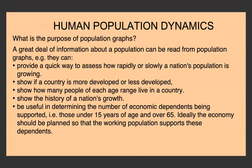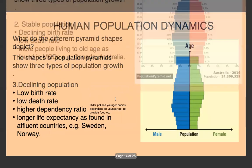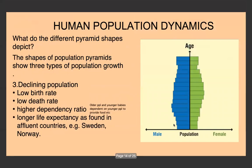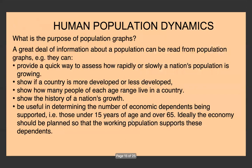Population pyramids can show if a country is more or less developed, since a stable or declining population usually indicates a more developed country, while rapidly increasing suggests a less developed one. They can also show how many people of each age range live in a country, reveal a nation's growth history, and help determine economic dependence — that is, the dependency ratio.